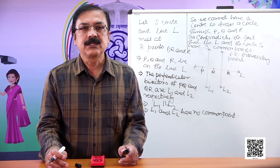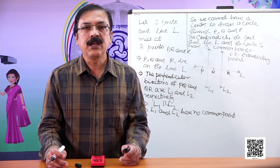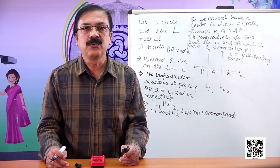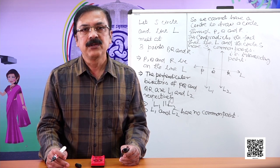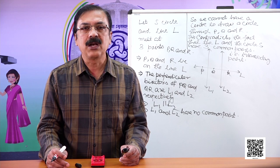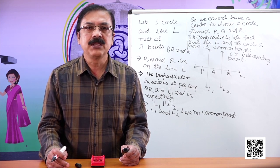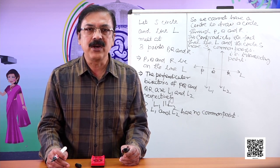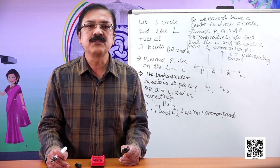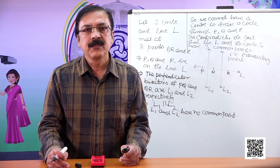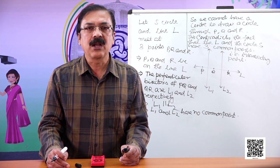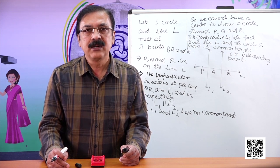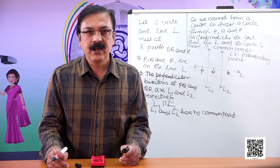Dear students, today we learned that a circle can be drawn through three non-collinear points and that is the unique circle which can pass through them. We also discussed applications of this theorem: construction of a circumcircle of a triangle, and completing a circle when an arc is given. I hope you understood. Today we will end here. Thank you.